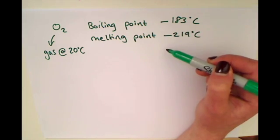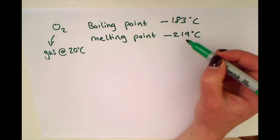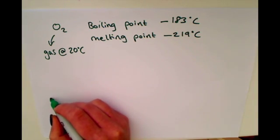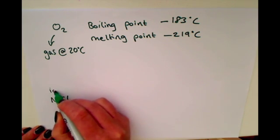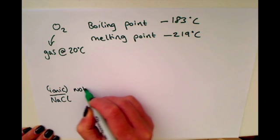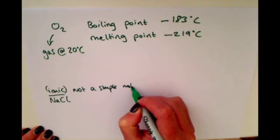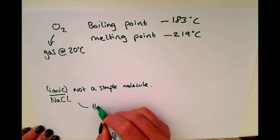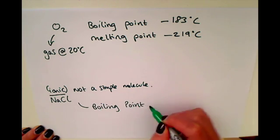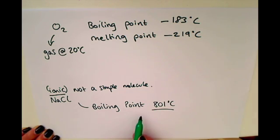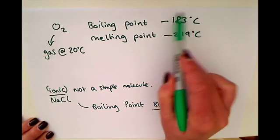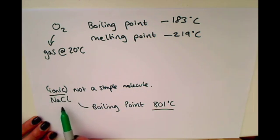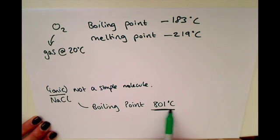You can liquefy and solidify oxygen, but you have to go to extremely low temperatures to do so. In contrast, something like an ionic compound — for example, salt — which is not a simple molecule but an ionic structure, has a boiling point of around 801°C. That's a really high boiling point compared to simple molecules like oxygen at −183°C, and salt is solid at room temperature.